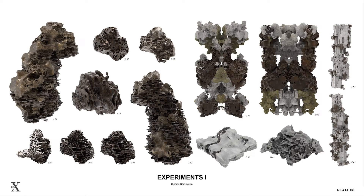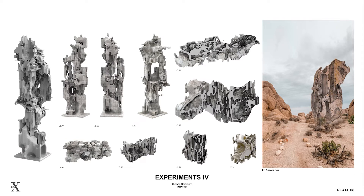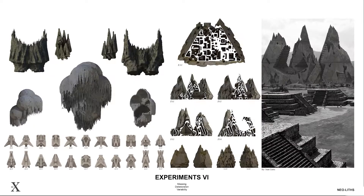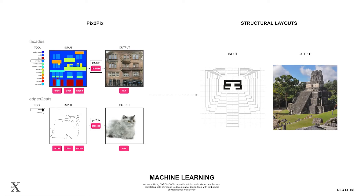These are some of our initial formal experiments, where we developed spaces and textures that incorporate some of the qualities of stone, such as porosity, surface articulation, assembly, massing, and pochet. We utilized Pix2Pix to build tools that enhance our design capacities by embedding environmental intelligence into the act of drawing a lithic structural layout while retaining authorship.